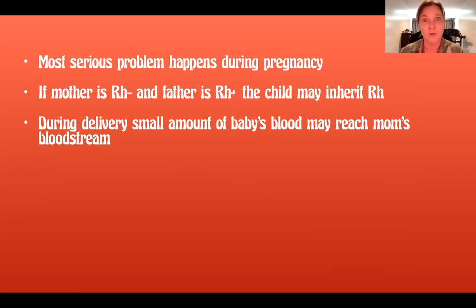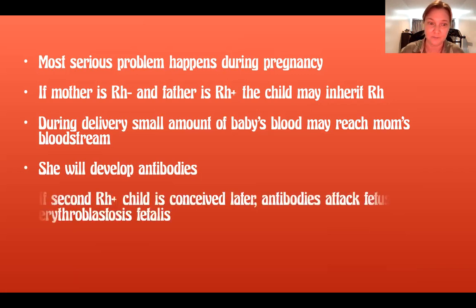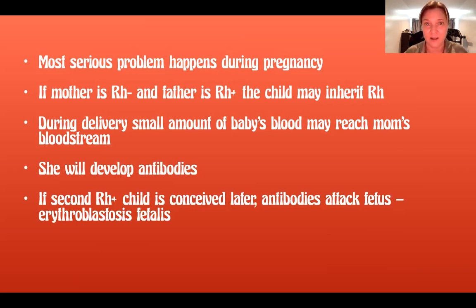During childbirth, because there's blood involved, a small amount of the baby's blood may reach the mother's bloodstream. If that happens — because mom is Rh negative and the baby is Rh positive — mom is going to develop antibodies against the Rh factor. This is not a problem for the first birth, but if she becomes pregnant again with another Rh positive fetus, her immune system will attack the fetus. That condition is called erythroblastosis fetalis.